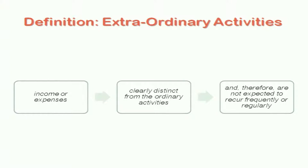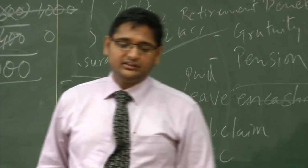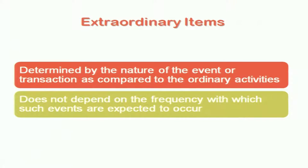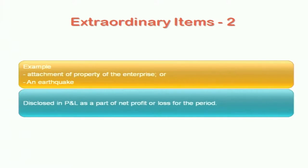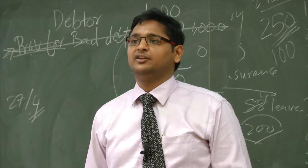Now we will talk about extraordinary items — items which are not ordinary. Income or expenses which are clearly distinct from your ordinary activities, and therefore are not expected to occur frequently or regularly, should be classified as extraordinary items and disclosed separately. It is determined by the nature of the event or transaction as compared to ordinary activities. Frequency is not important; the most important factor is the nature of the activity. For example, an earthquake — any loss which has happened due to an earthquake is an extraordinary item. It is not part of ordinary activity, and any loss because of that should be separately disclosed in the income and expenditure account.